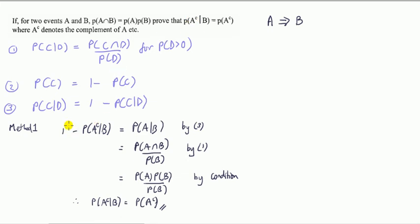I know I can use condition three here, I mean this is result three. If I do one minus this, that gets, that gives me an output A given B, so I've got rid of the A complement. Then I can use result one, why? Because now I've got P of A and B, which is the condition.